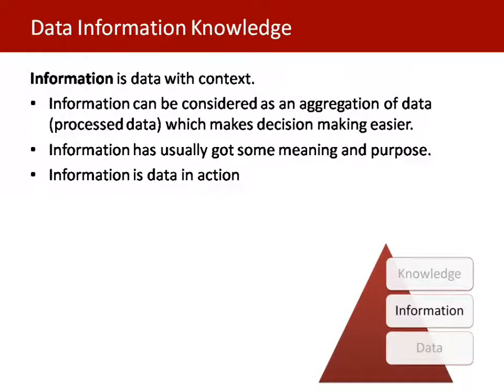Now let's look at information. Information is data with context. Information can be considered as an aggregation of data — processed data — which makes decision-making easier. Information usually has some meaning and a purpose, and is also data in action.